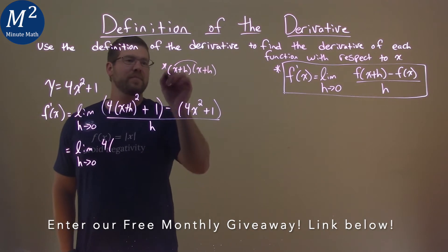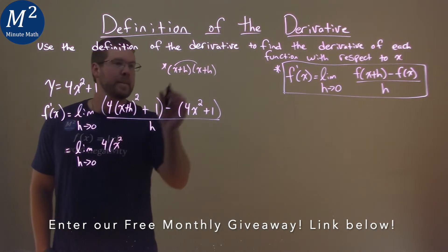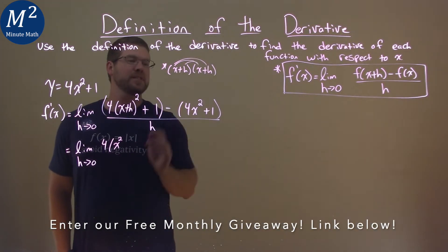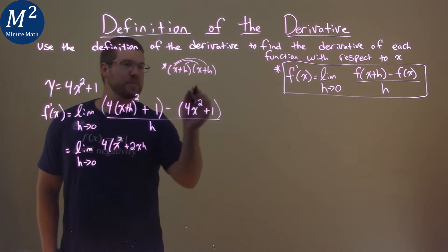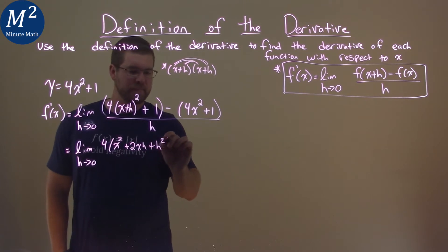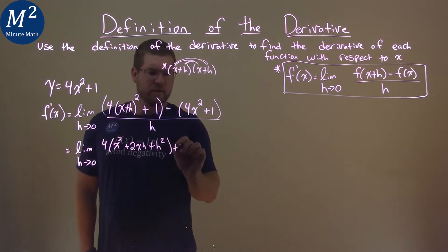Alright, x times x is x squared, and then we have x times h and h times x is 2xh, and then h times h, h squared. Then we still have the plus 1.